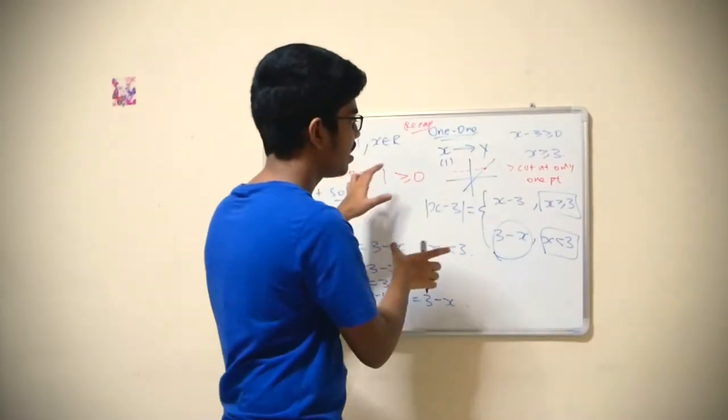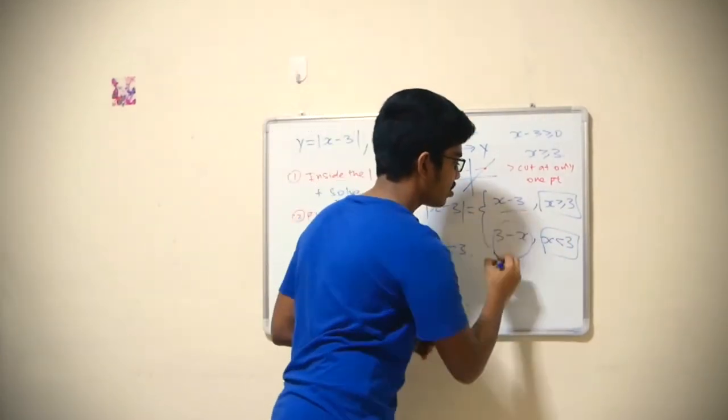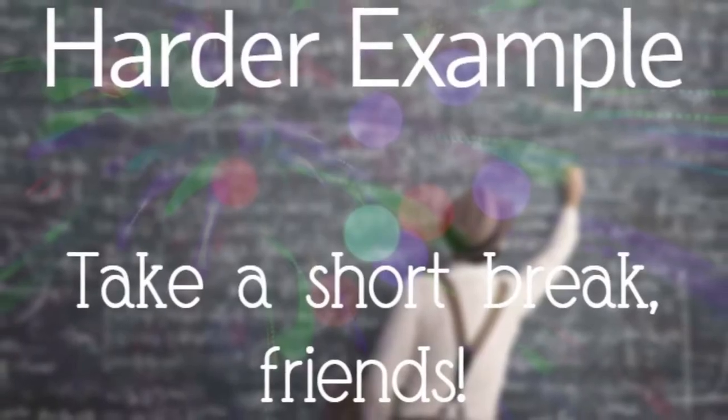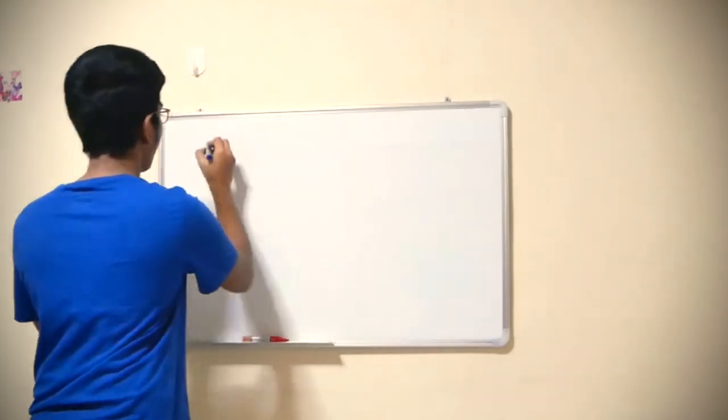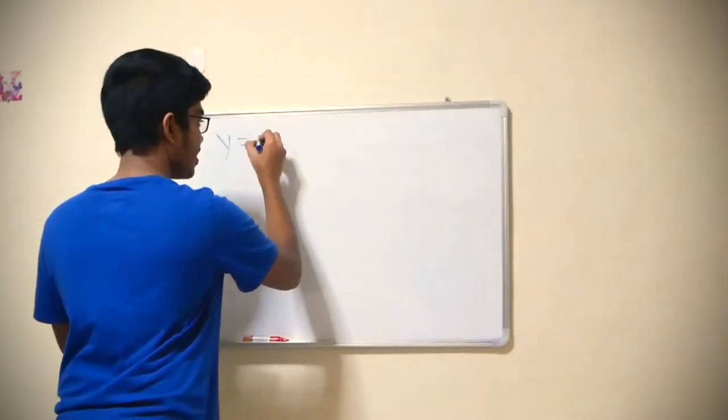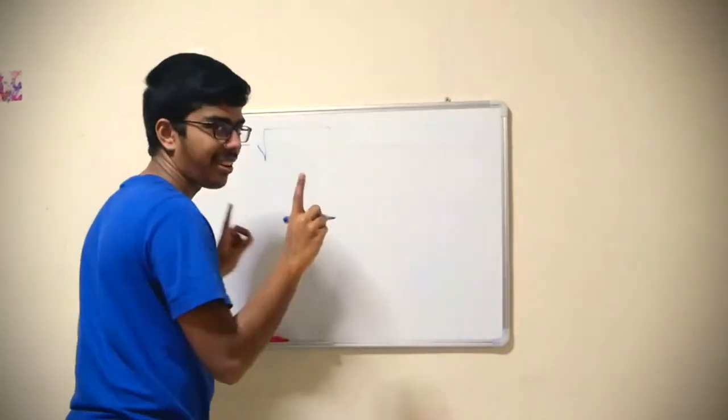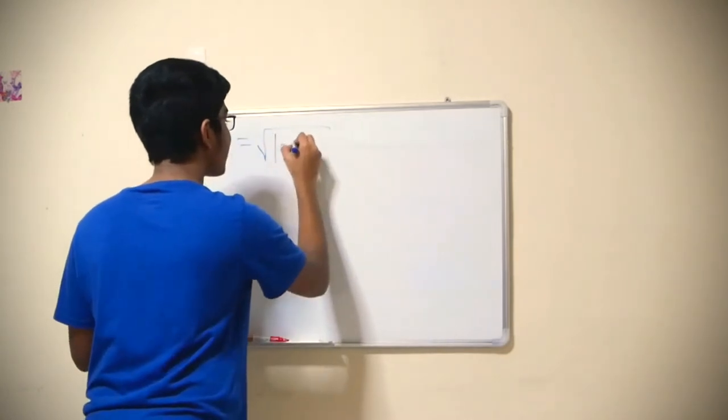But I don't want to go too deep into that. My main focus is about choosing the piecewise part. Which one should you choose? Now let's go to a more difficult example.